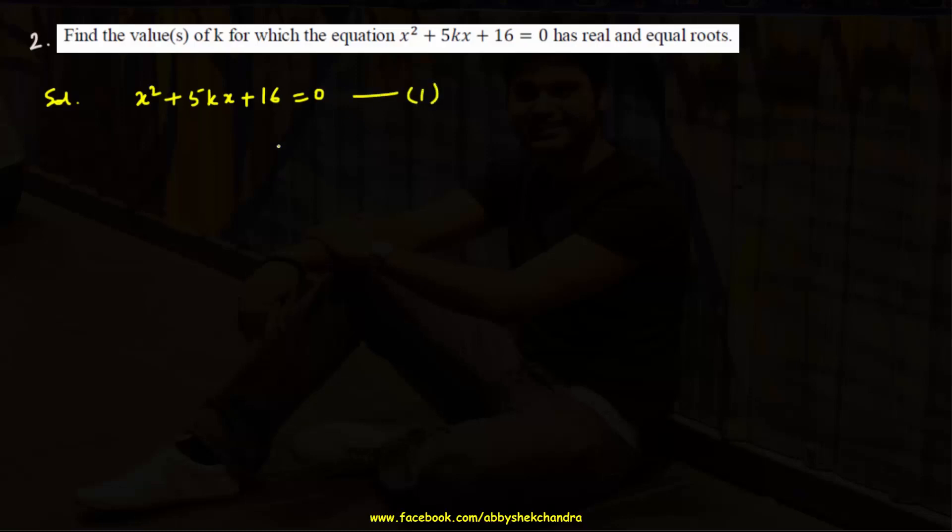Second option for question 2: find the value of K for which the equation x² + 5Kx + 16 = 0 has real and equal roots. For equal roots, the discriminant must be equal to zero.